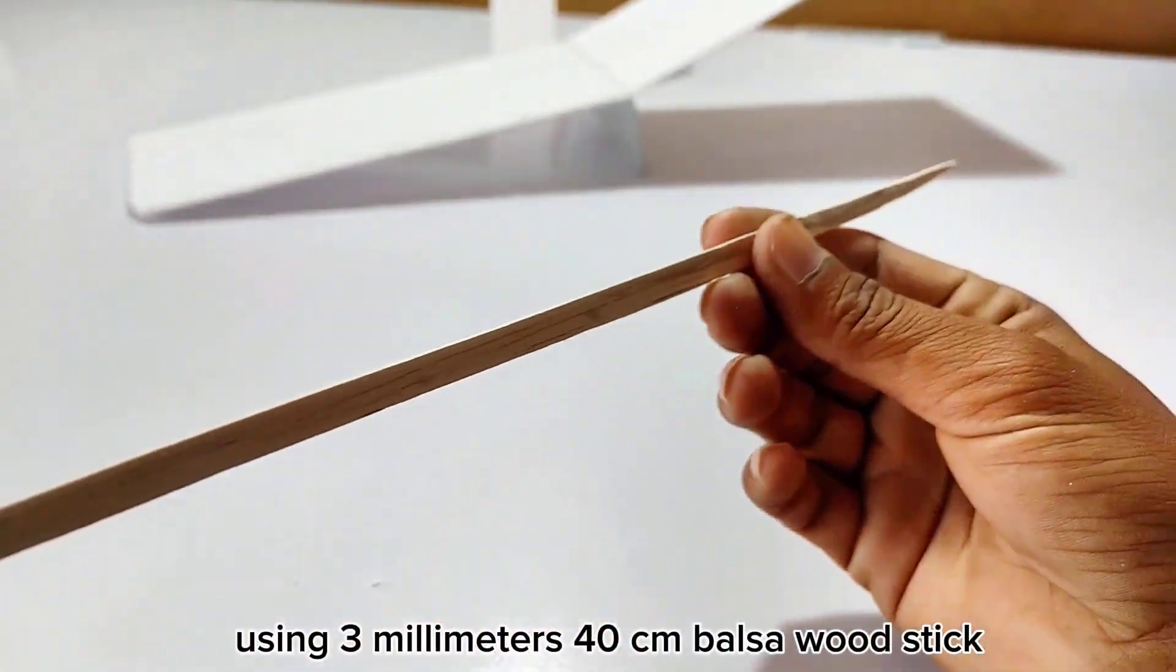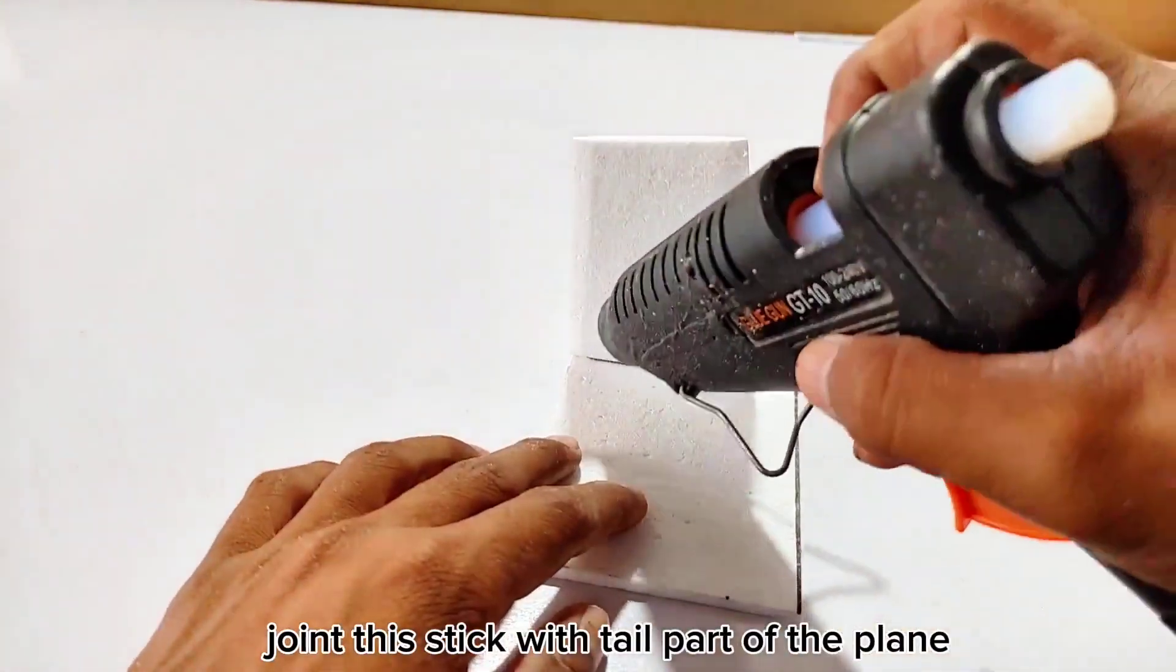Using 3mm 40cm balsa wood stick, joint this stick with tail part of the plane.